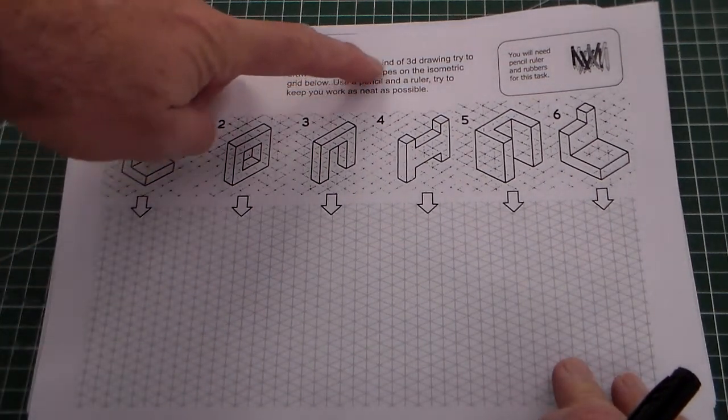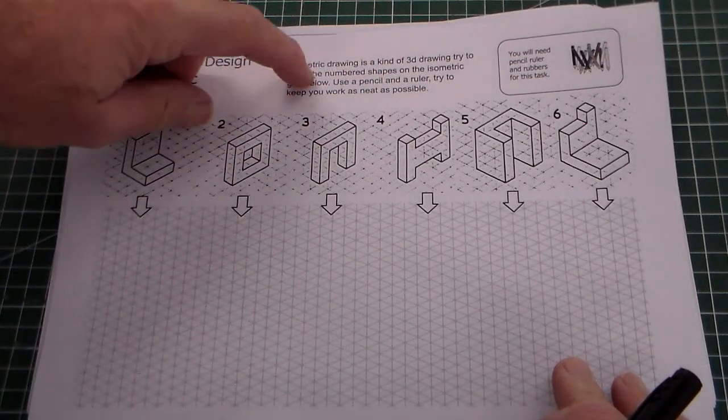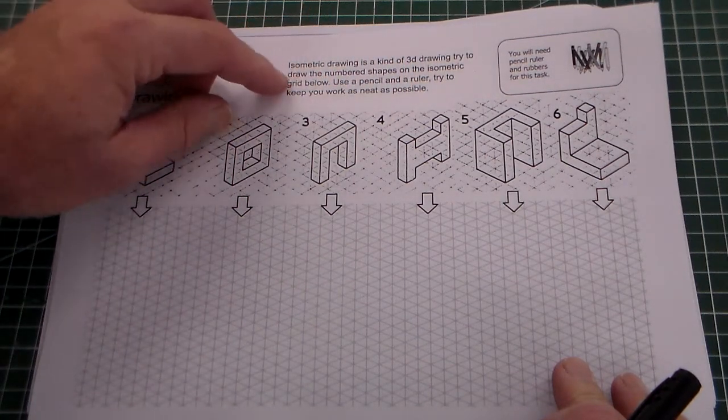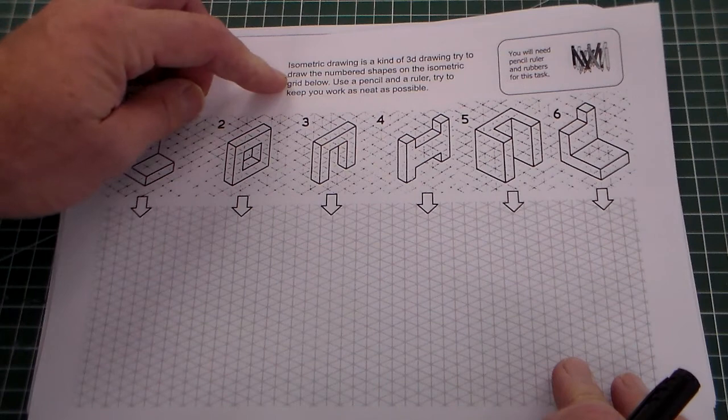It says isometric drawing is a kind of 3D drawing. Try and draw the numbered shapes on the isometric grid below. Use a pencil and a ruler, try and keep your work as neat as possible.